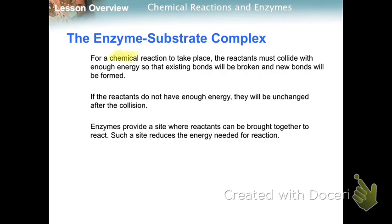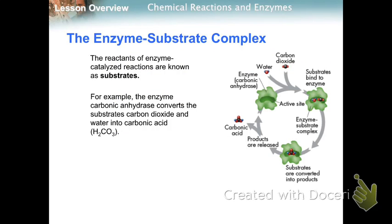For a chemical reaction to happen, the reactants have to have enough energy to break bonds and make new bonds. If the reactants don't have enough energy, they will not change. Enzymes provide a site where the reactants can be brought together to react. The reactants of enzyme-catalyzed reactions are known as substrates — they're what are getting changed and worked on. The enzyme carbonic anhydrase converts carbon dioxide and water into carbonic acid.